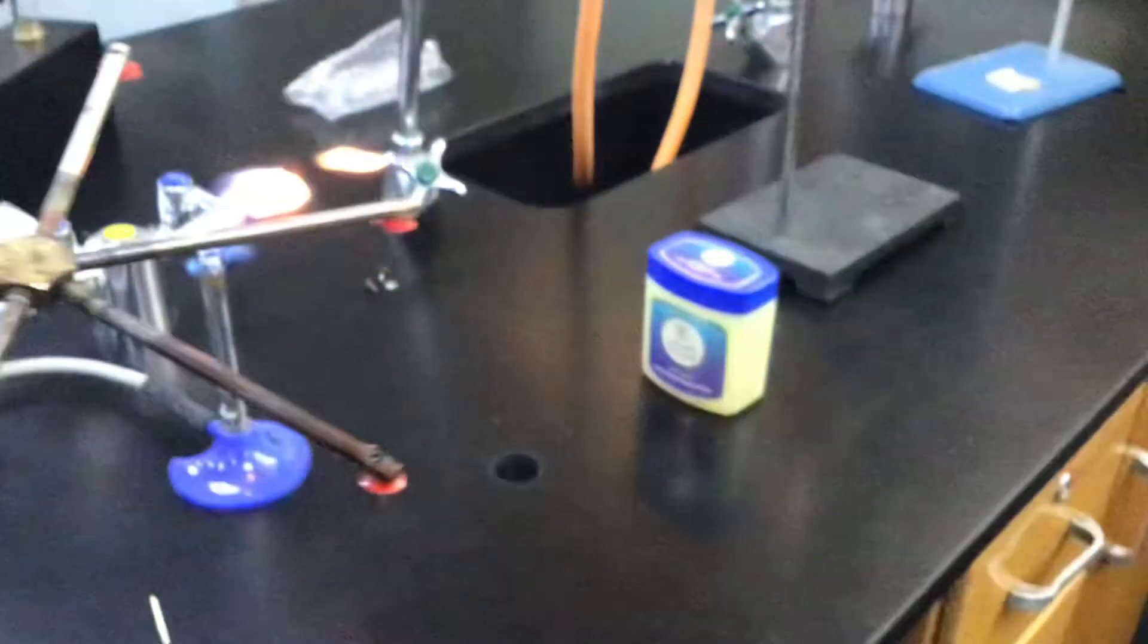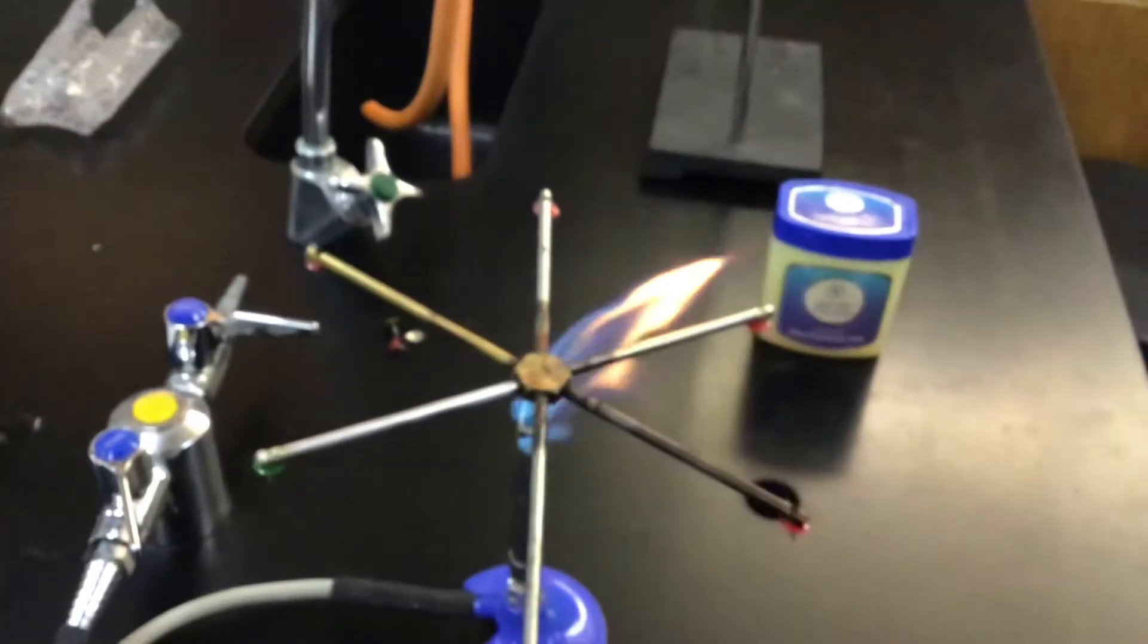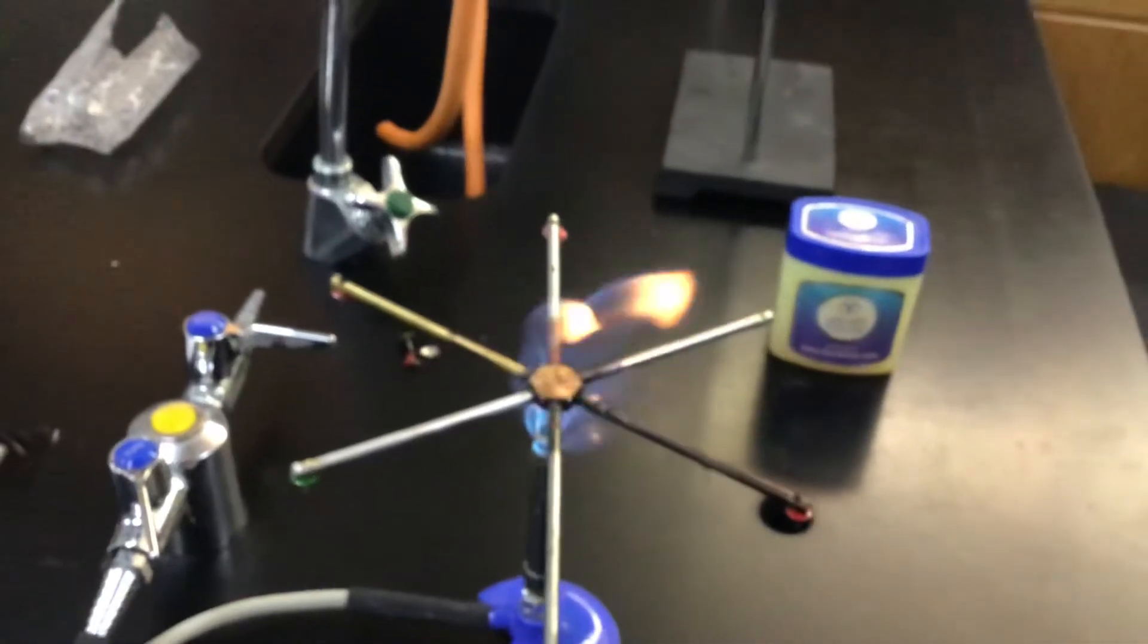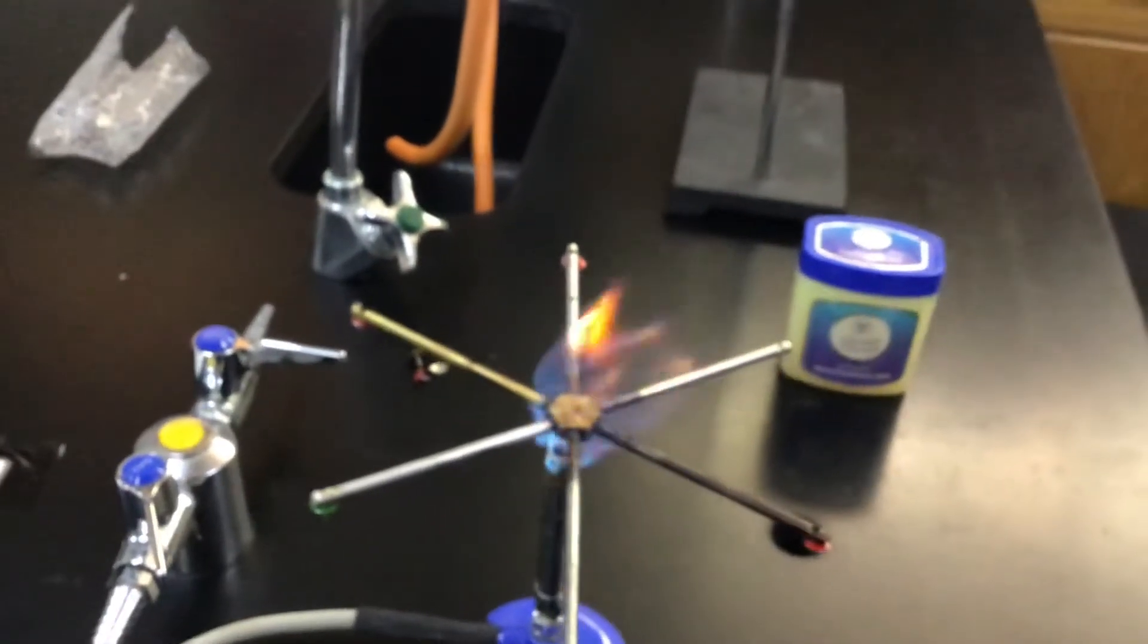And then we're going to put them in our Bunsen burner flame and we're going to watch the ones that drop. So nickel is gone.